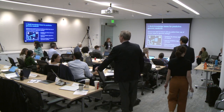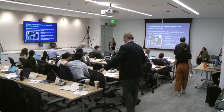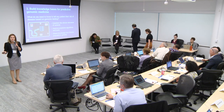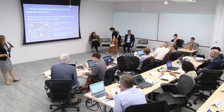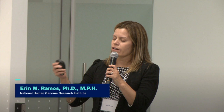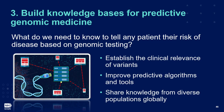We're moving to Theme Three: knowledge bases for predictive genomic medicine. The framing question is: what do we need to know to tell any patient their risk of disease based on genomic testing? Areas from previous strategic planning sessions include knowledge bases for establishing the clinical relevance of variants. We have the NHGRI-supported ClinGen, but what other data types and knowledge bases are needed to really get at this question?